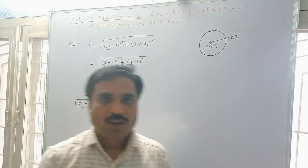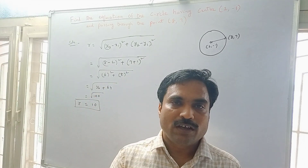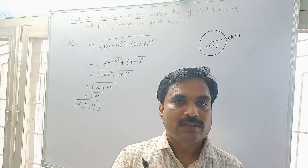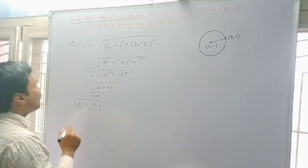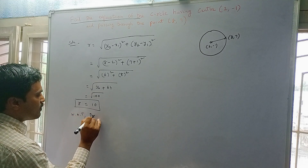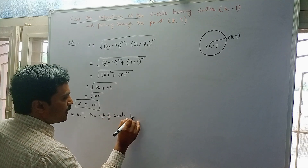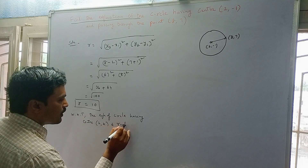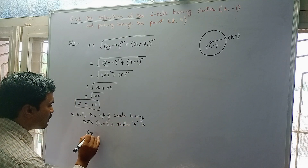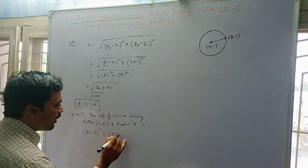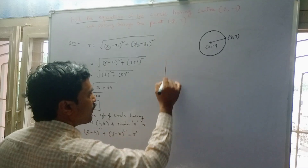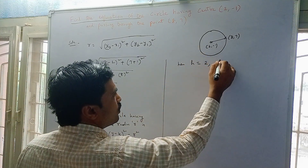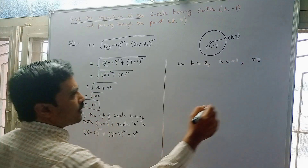Now we find the equation of the circle. The standard equation of a circle with center (h, k) and radius r is: (x - h)² + (y - k)² = r². Here h = 2, k = -1, and r = 10, as just found. We substitute these values into the equation.